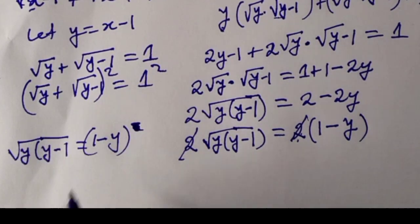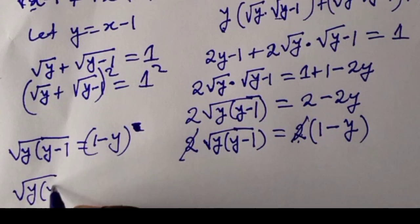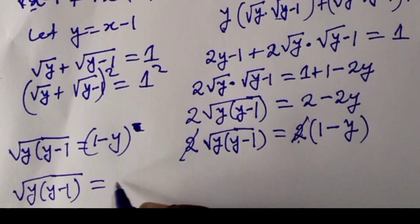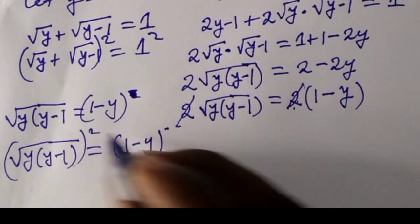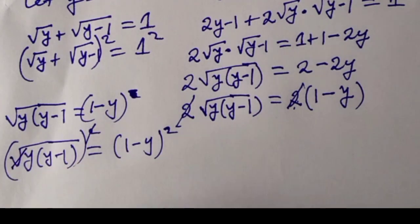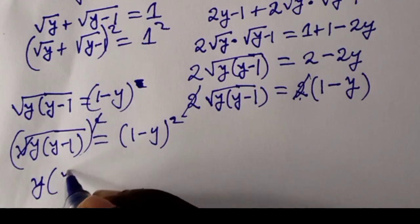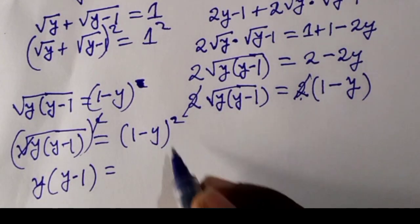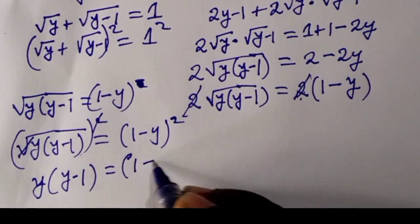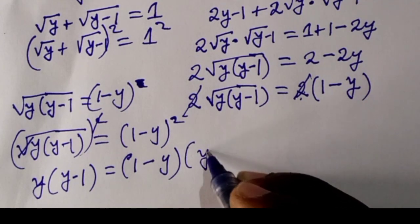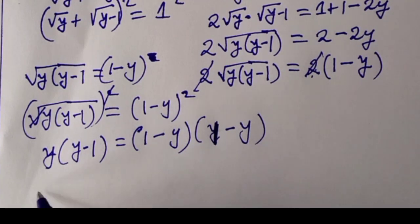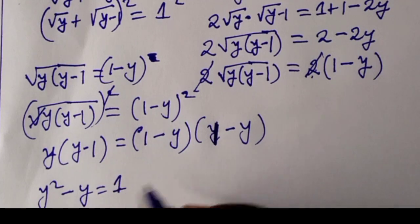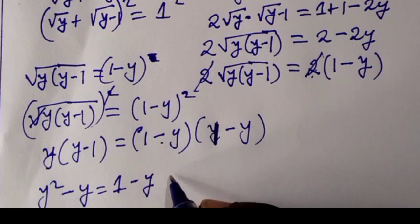To eliminate the square root, we square both sides: y times the bracket y minus 1 equals the bracket 1 minus y squared. The right side is a difference of two squares: 1 minus y, times 1 minus y. Expanding the left side: y squared minus y. Expanding the right side: 1 times 1 is 1, then 1 times minus y is minus y, minus y times 1 is minus y.